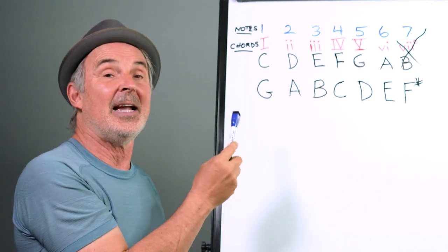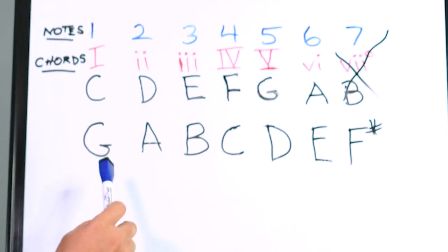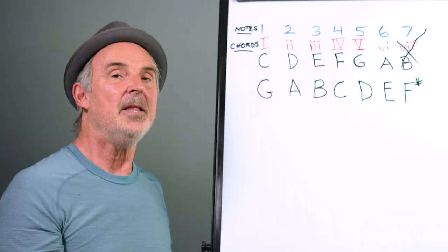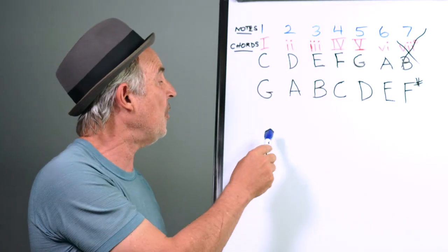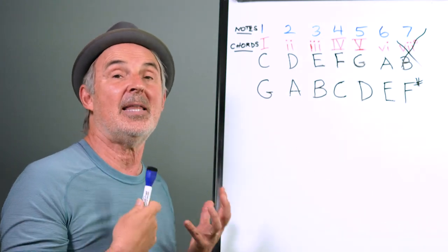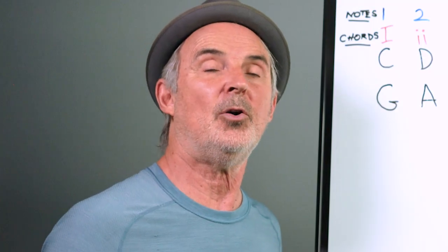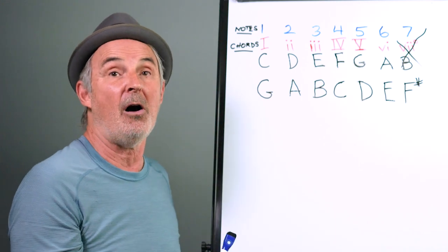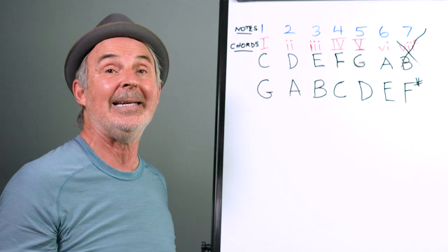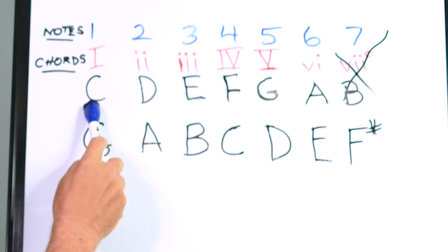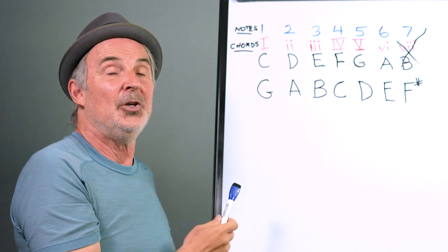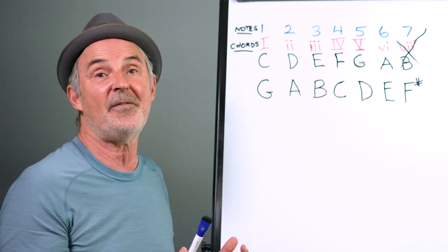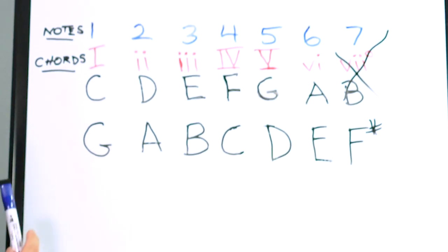I've written down the G scale to show how this applies to a different key. In G, the 1 chord is G, the 4 chord is C, and the 5 chord is D — the same concept applies to any other key. The most common chords used in popular music are the 1, 4, and 5 chords, and if you add the 6 chord — usually a minor chord — you cover a lot more songs. In the key of C that gives you C, F, G, and A minor. A very common order from the 50s would be a 1, 6, 4, 5 progression.